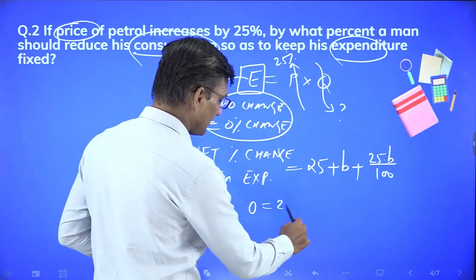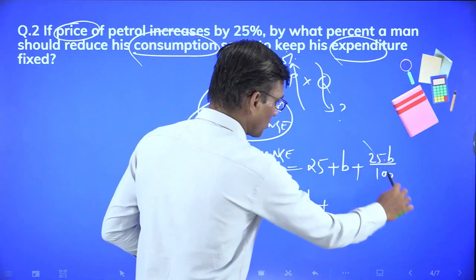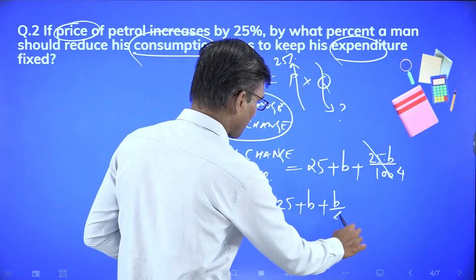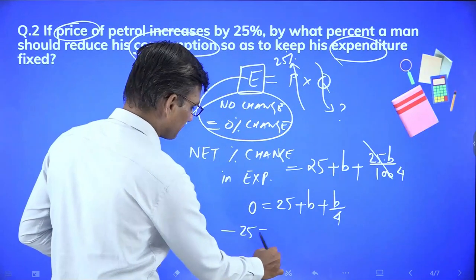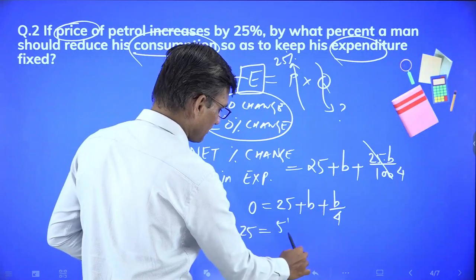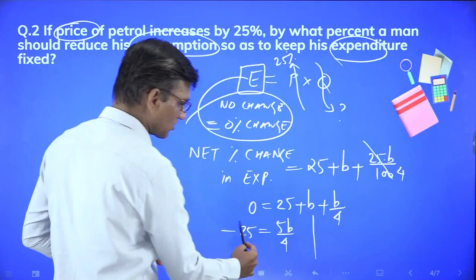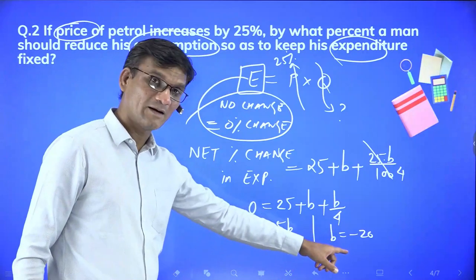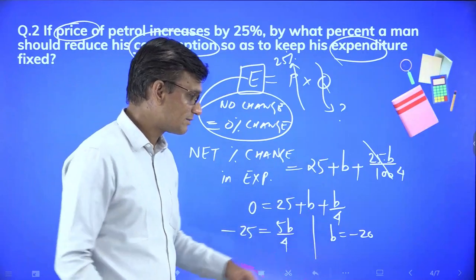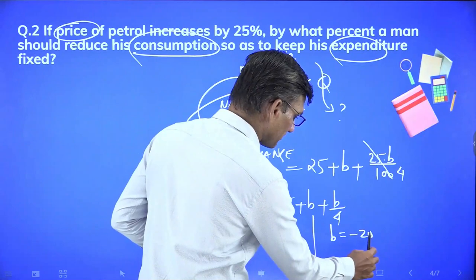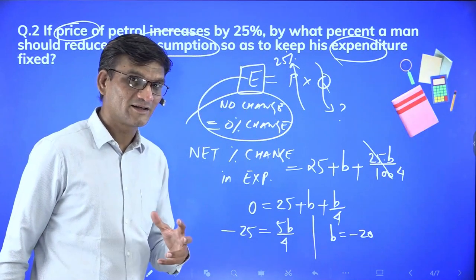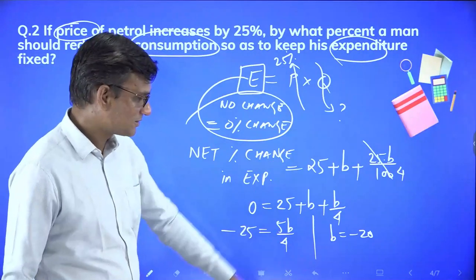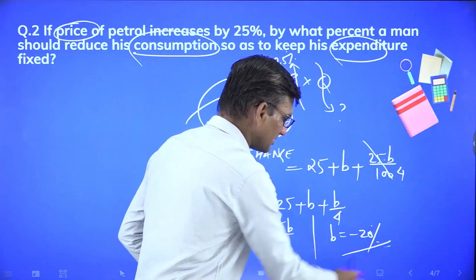So zero equals 25 plus b plus 25b by 100. This becomes b by 4. Taking 25 to the other side: minus 25 equals 5b by 4. Cross multiplying gives minus 20 equals b. So b is minus 20, meaning you need to reduce consumption by 20 percent to keep expenditure fixed.